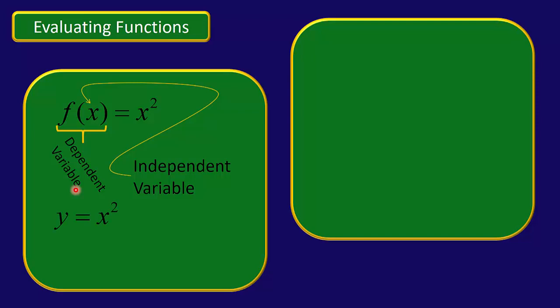Sometimes what we'll do is, instead of writing f of x equals x squared, we'll write y equals x squared. If we write it as f of x, it's a little bit easier to talk about evaluating the function at a particular value — like f of 2, f of 3, and so forth. Whereas with y equals x squared, we'd have to say y equals x squared where x equals something. So a lot of times f of x notation is easier to use. In either case, f of x and y are both referred to as the dependent variable.